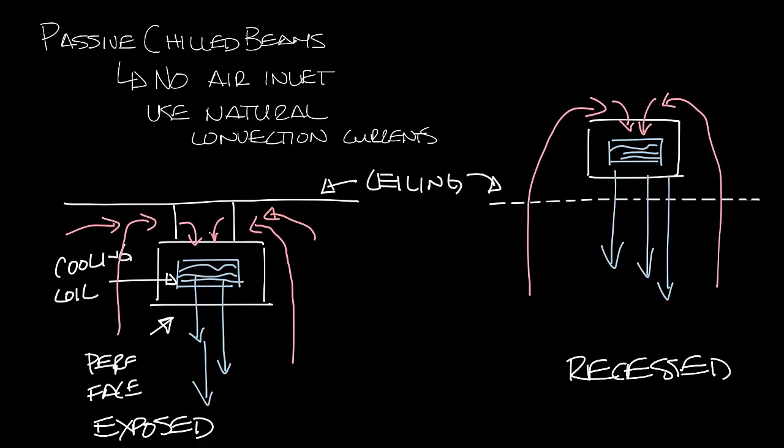Because the cold air falls directly below the passive beam, you want to make sure passive beams are located in hallways or other areas where people won't be sitting directly under them in the space.